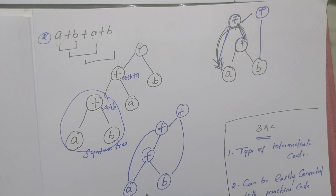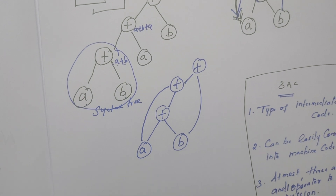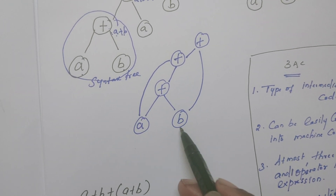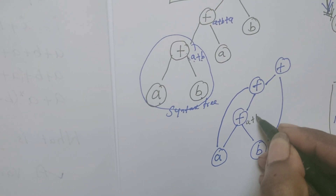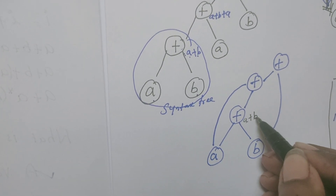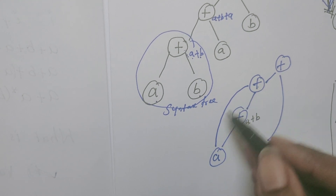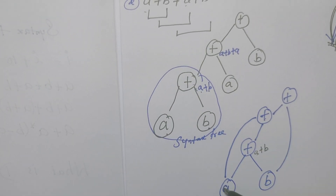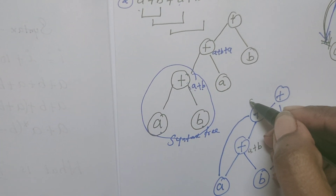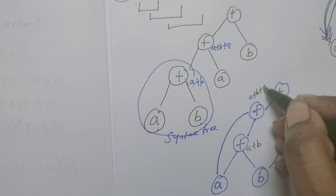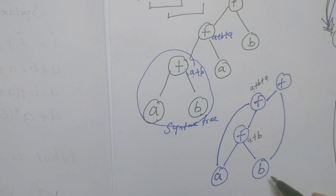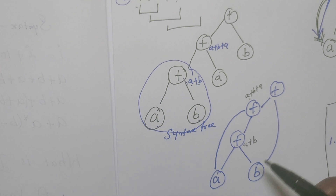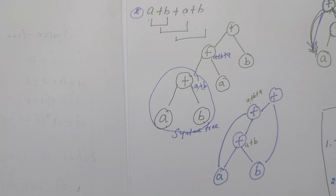Now if I construct the DAG for the same expression: first I create a leaf node for a, leaf node for b, both are added, so at this node a plus b is available. Now this a plus b is added with a again - the leaf node for a is already created, so we just refer to it. So a plus b is added with a, giving a plus b plus a at this node. Now a plus b plus a must be added with b - we already have b, so this is how the DAG is constructed for the given expression.